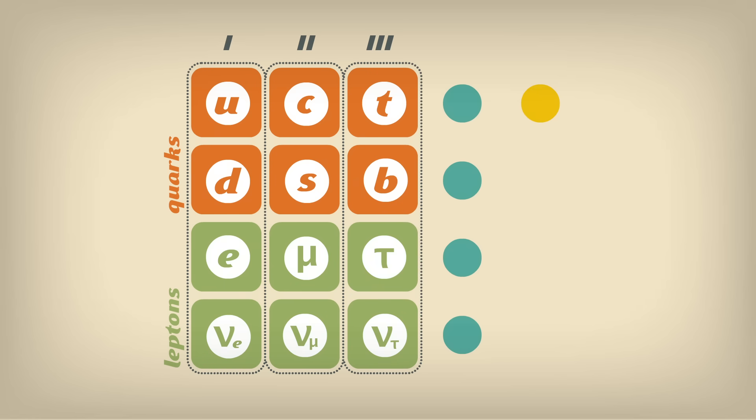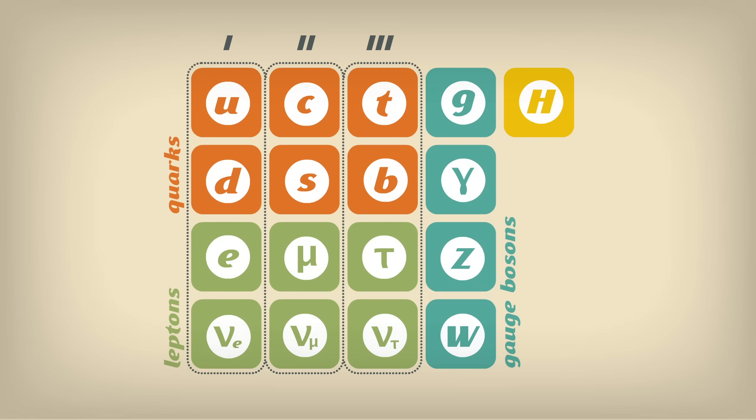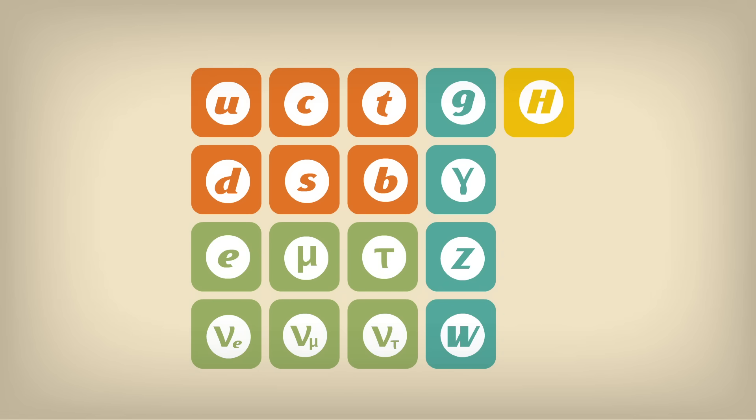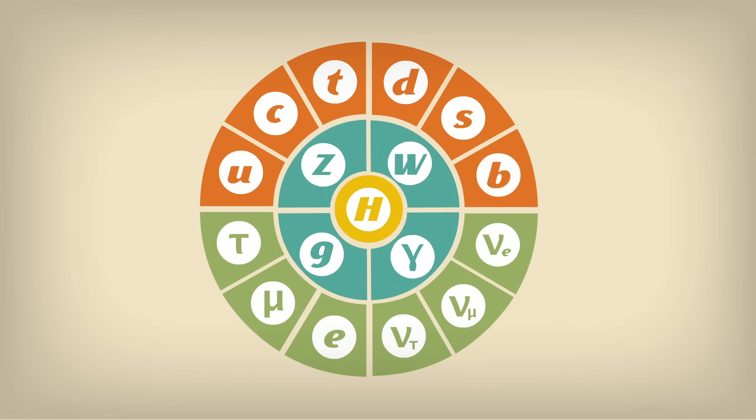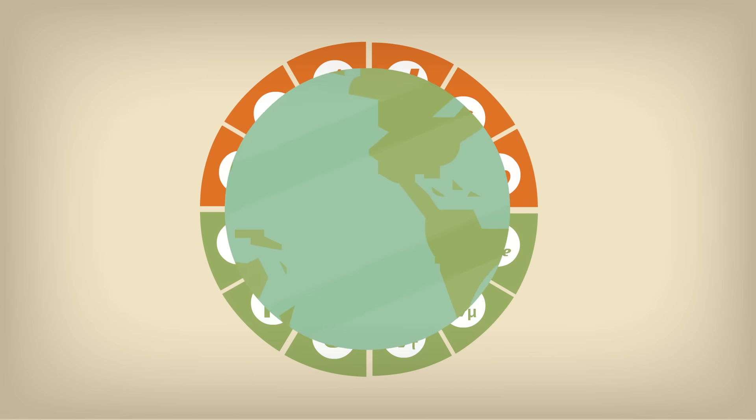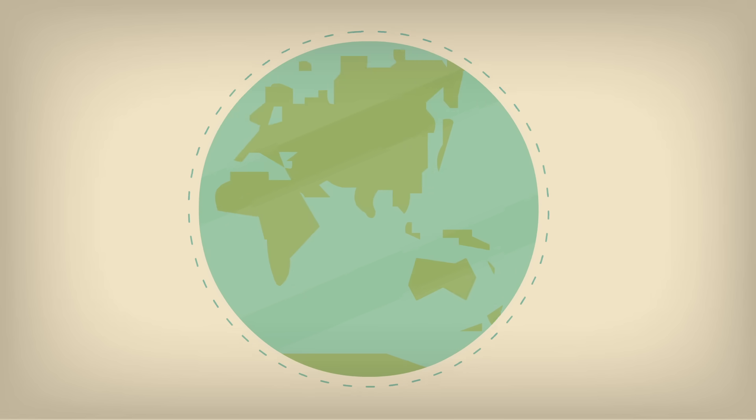Particles interact with each other according to a theory called the Standard Model. The Standard Model is a remarkably elegant encapsulation of the strange quantum world of indivisible, infinitely small particles. It also covers the forces that govern how particles move, interact, and bind together to give shape to the world around us. So how does it work?